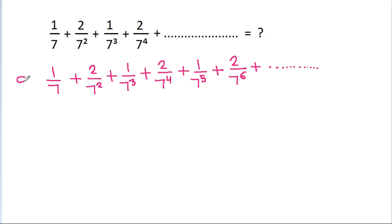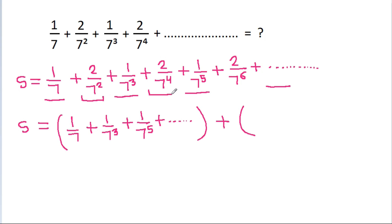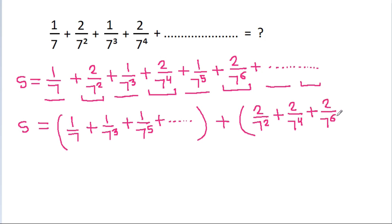Suppose it is equal to s. Then s is equal to 1/7 plus 2/7² plus 1/7³ plus 2/7⁴ plus 1/7⁵ plus 2/7⁶ plus so on. We split this into the odd-power terms: 1/7 plus 1/7³ plus 1/7⁵ plus so on, and the even-power terms: 2/7² plus 2/7⁴ plus 2/7⁶ plus so on.